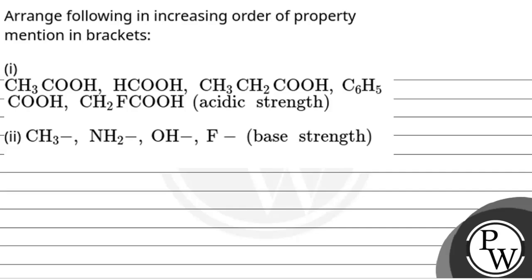Hello, let's read this question. The question says, arrange the following in increasing order of the property mentioned in brackets. Part 1 में हमारे पास compounds दिए गए हैं और उनकी acidic strength के बारे में पूछा गया है, और Part 2 में हमसे base strength पूछा गया है। The key concept of this question is acids and bases.